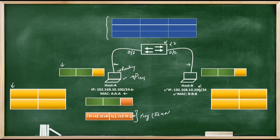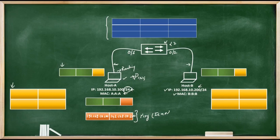We have discussed this in the last video of this series. As you can see, we have mentioned the subnet mask /24 along with the IP address, through which Host A comes to know that Host B is part of its own network, which is 192.168.10.0/24. If the destination address of the packet is in the same network, Host A forwards this packet out of its ethernet interface.